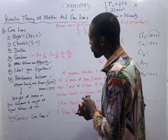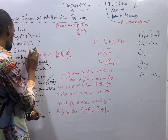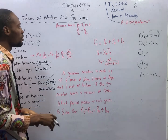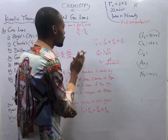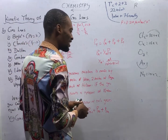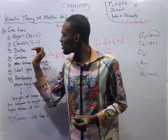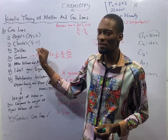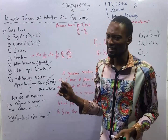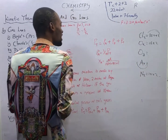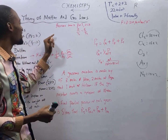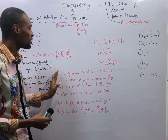Our major focus today is the remaining parts: the law of partial pressure and Graham's Law, under which we will solve questions. There is also the pressure law, which states that pressure is directly proportional to temperature when volume is constant. Boyle's Law keeps temperature constant; Charles's Law keeps pressure constant; pressure law compares pressure and temperature, keeping volume constant. So if pressure is directly proportional to temperature, P1 over T1 equals P2 over T2.